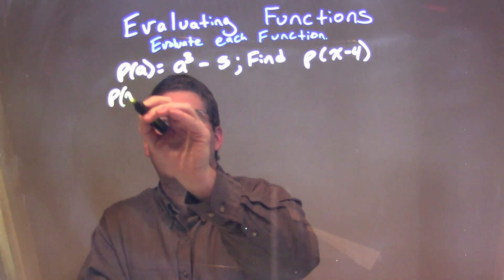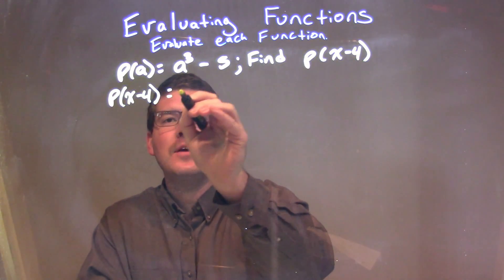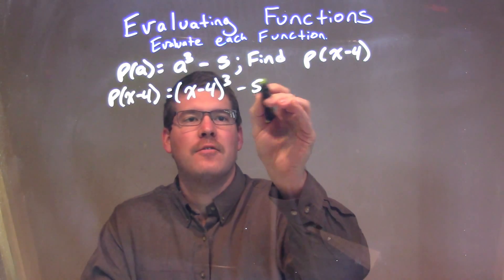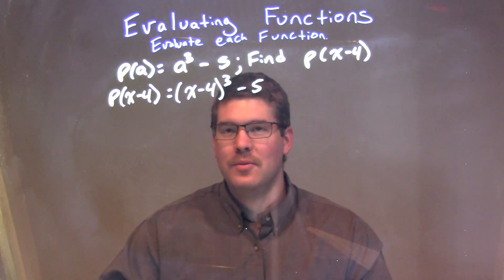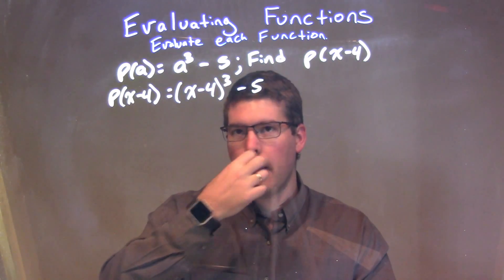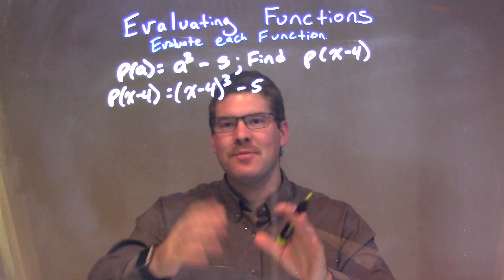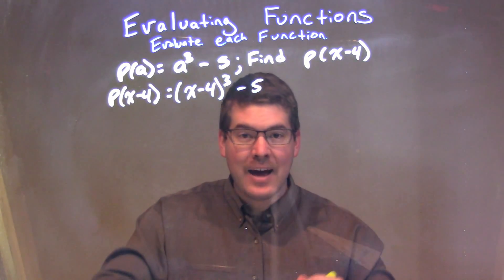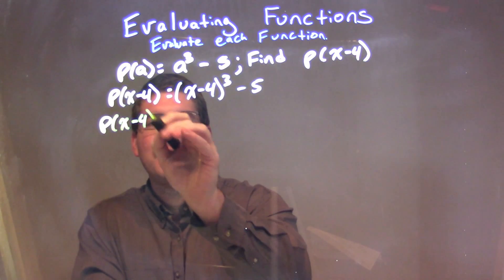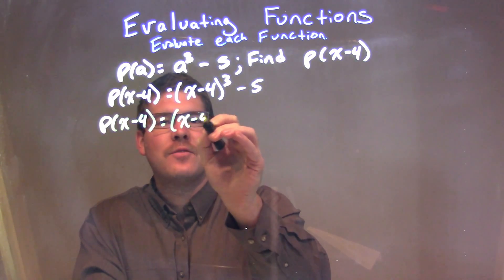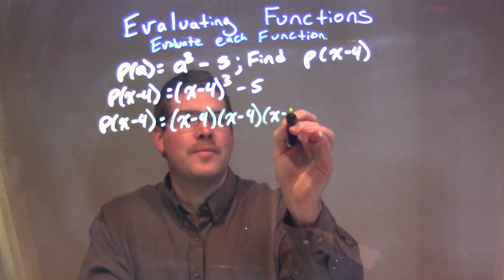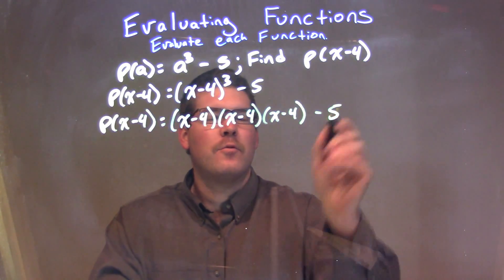So, we have p of x minus 4 is equal to x minus 4 to the third power minus 5. What I need to do now is simplify this, and since I have x minus 4 to the third power, I need to write this as x minus 4 times x minus 4 times x minus 4. So, we have p of x minus 4 is equal to x minus 4 times x minus 4 times x minus 4, minus 5.